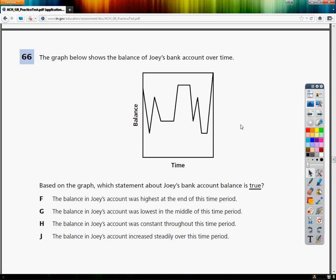Based on the graph, which statement about Joey's bank account is true? The bottom axis lists time, so we're assuming this is time going up.